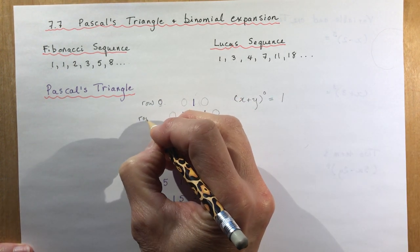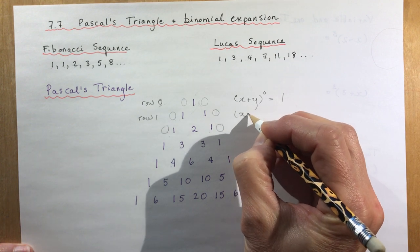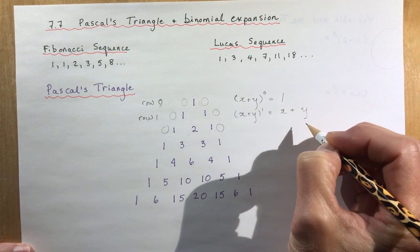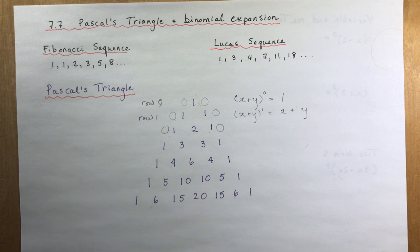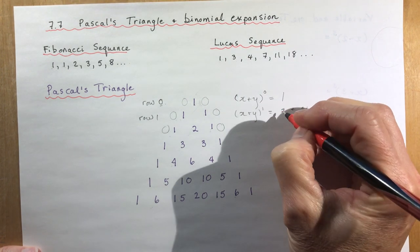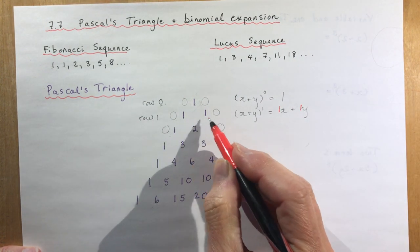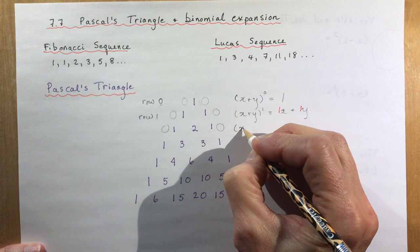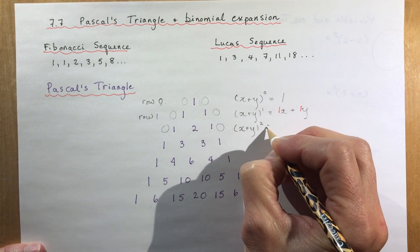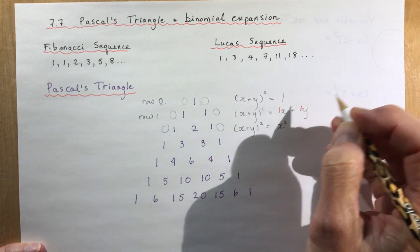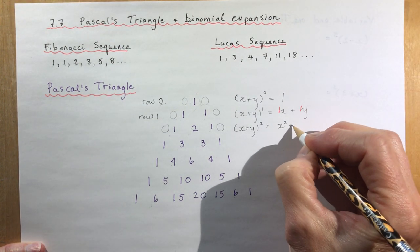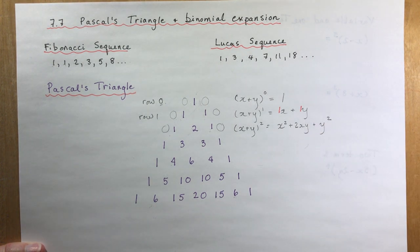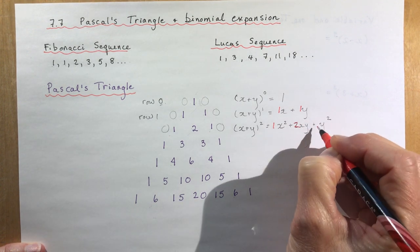The next row is row 1, and this corresponds to (x + y) to the power of 1, which gives x + y. What's important for the triangle is that it's 1x + 1y — that's where we get the ones. You should also be familiar with squaring a binomial: (x + y)² gives x² + 2xy + y², and that's where we get the 1, 2, 1 in row 2.